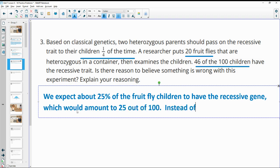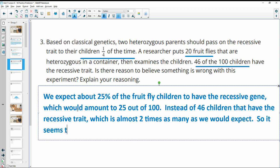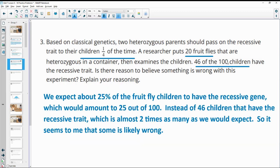Instead, we have 46 that have the recessive trait, which is almost double, almost two times as many as we would expect. So it seems to me that something's wrong. We wouldn't expect it to be almost double in 100 children. That seems a bit excessive.